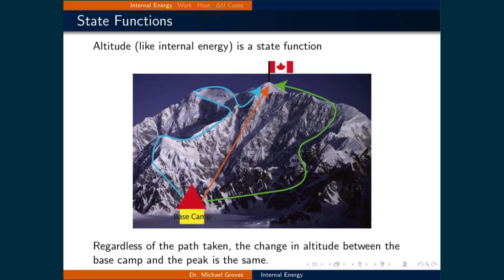We need to define several statements to fully utilize the first law of thermodynamics. A state function is a quantity that is path independent, meaning that regardless of how you change a system from one state to another, the change in that quantity remains the same. For example, altitude is a state function — to find the change in altitude between a mountain summit and base camp, we only need to subtract one from the other, regardless of the route taken. Internal energy is a state function, so to find the difference in internal energy, we only need the initial and final values; the process used to change it is irrelevant.